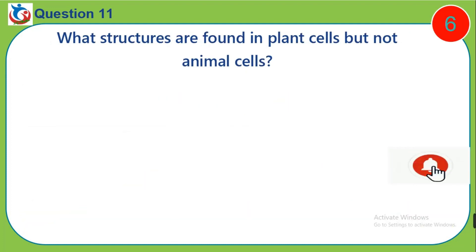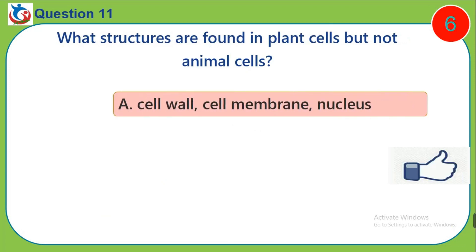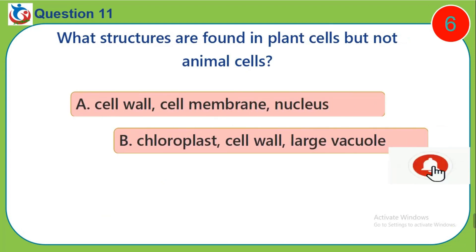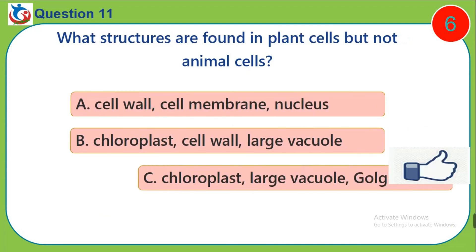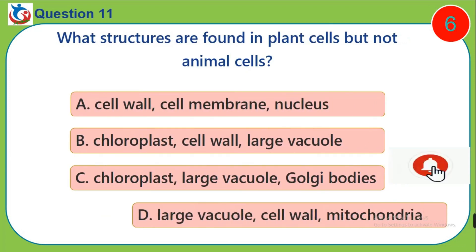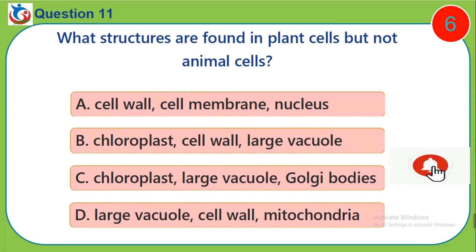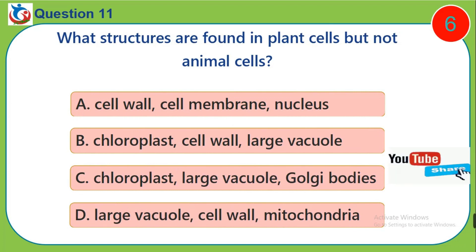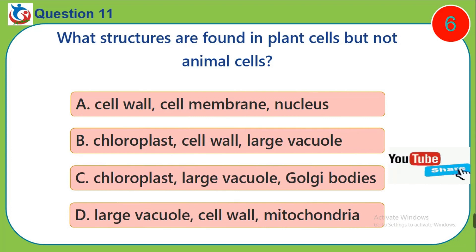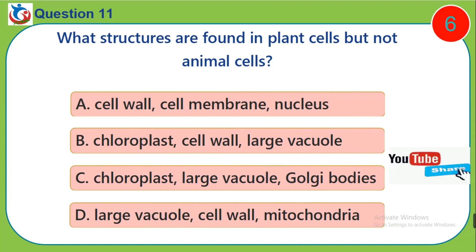Question 11. What structures are found in plant cells but not animal cells? A. Cell wall, cell membrane, nucleus. B. Chloroplast, cell wall, large vacuole. C. Chloroplast, large vacuole, Golgi bodies. D. Large vacuole, cell wall, mitochondria.